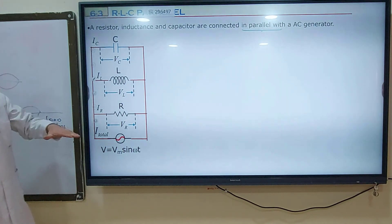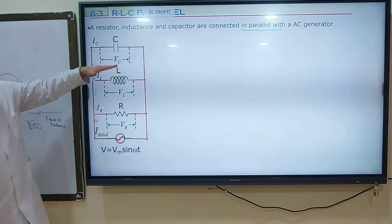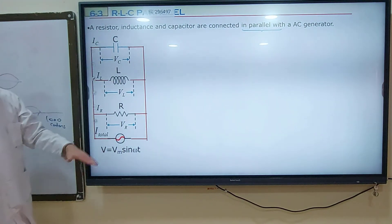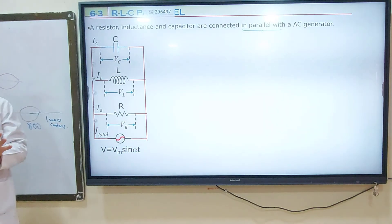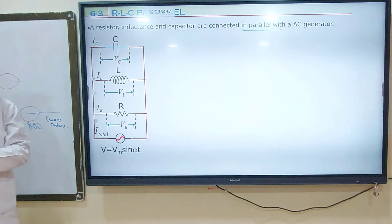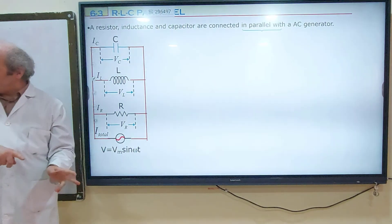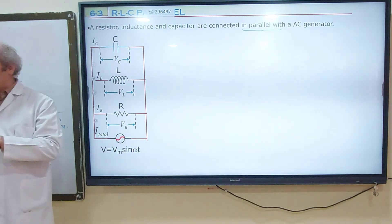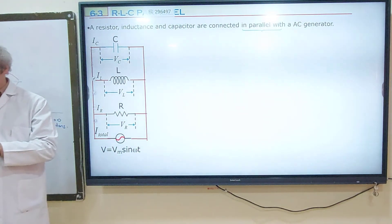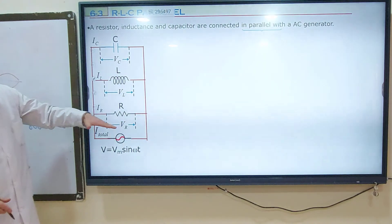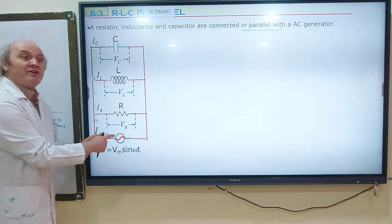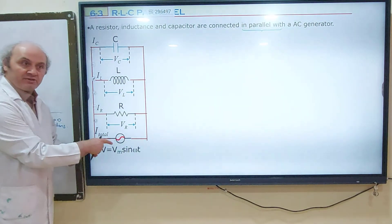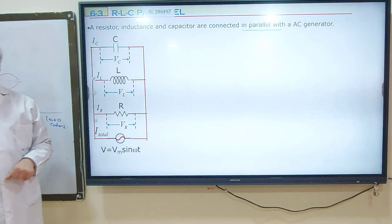In a parallel combination, the potential difference is the same. Electric currents are different. In a series circuit, electric currents are equal and potential differences are different. So Vr, Vl, Vc, and the voltage of the generator are all equal to each other — all R, L, C will have the same potential difference as the generator.